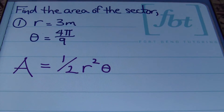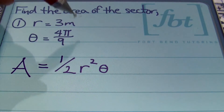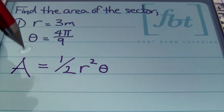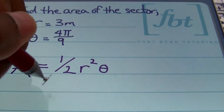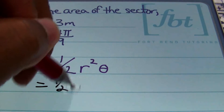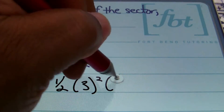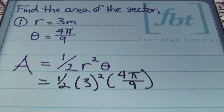In problem number one, we're asked to find the area of the sector given a radius of three meters. Theta is in radians — I know that because there's no degree symbol — and theta equals 4π over 9. I'll be using the simplified formula for when the angle measurement is in radians. Let's plug in values: one-half times a radius of three meters squared, times theta, which is 4π over 9. This is my initial setup.